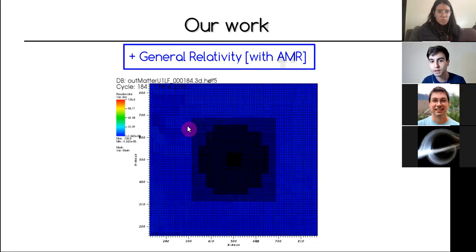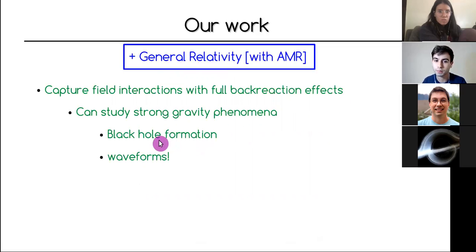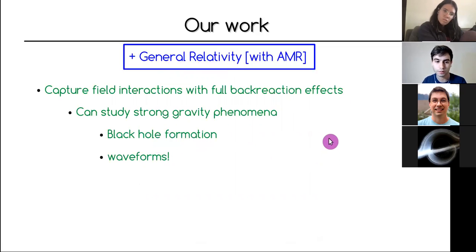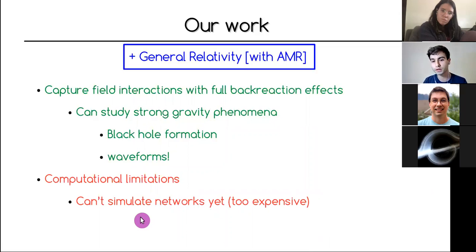In our work we present the first general relativistic simulation of cosmic strings with adaptive mesh refinement. The movie shows how the code resolution is adjusted by the dynamics of the system, resolving only the interesting regions. Adding general relativity means we can capture field interactions with full back-reaction effects and study strong gravity phenomena such as black hole formation, and compute waveforms for LIGO/Virgo, KAGRA, and the future LISA.